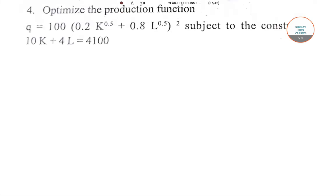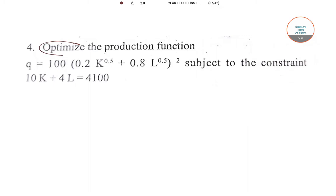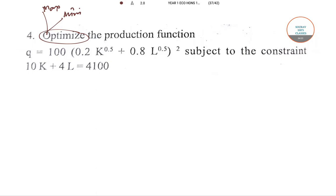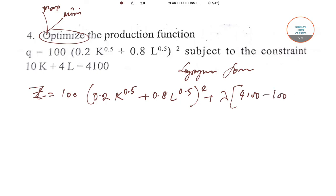Now for the next question - this is an optimization of a production function subject to a constraint. Very similar: whenever something is given with respect to another structure, apply the Lagrangian format. I'll use z instead of L since the question already uses L for labor. So z equals 100(0.2K^0.5 + 0.8L^0.5)² plus lambda(4100 - 10K - 4L).